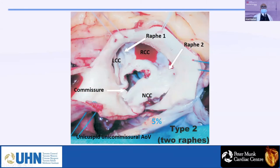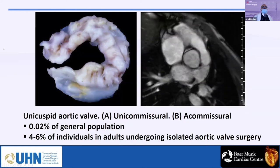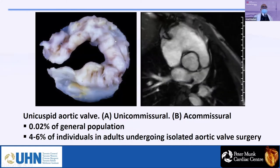Type 2 has two raffae — one between right and left, and another between right and non-coronary — with only one true commissure. This can be called a bicuspid aortic valve with two raffae, or a unicuspid aortic valve, since there is only one commissure. An example of unicuspid aortic valve shows just one commissure and one cusp, confirmed also on MRI.